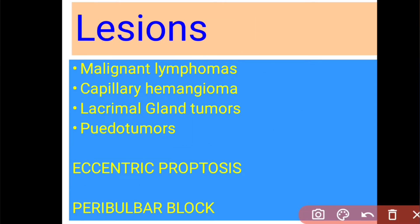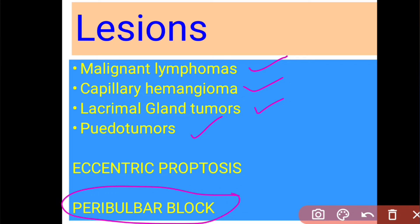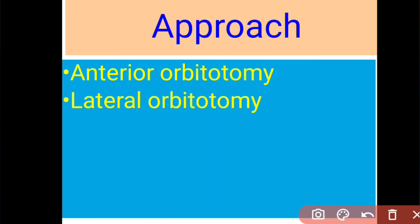If you remember the contents, it is easy to remember the lesions. Lesions in the peripheral space include lacrimal gland tumors, capillary hemangiomas, malignant lymphomas, and pseudotumors. Remember: a lesion in the peripheral space will lead to eccentric proptosis. This space is also used to give the peribulbar block and is approached by either anterior orbitotomy most of the time, or lateral orbitotomy sometimes.